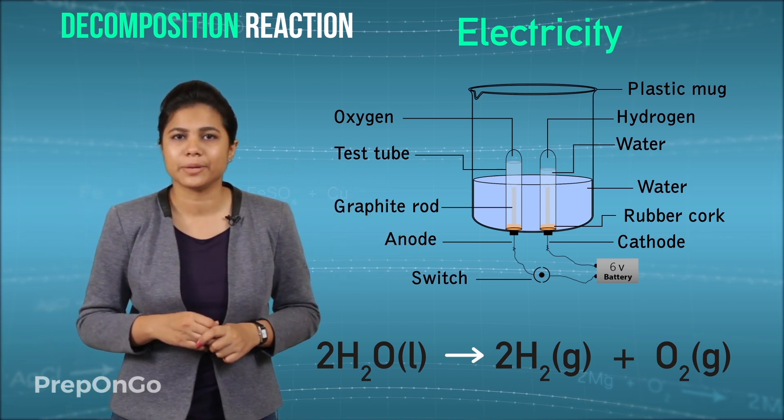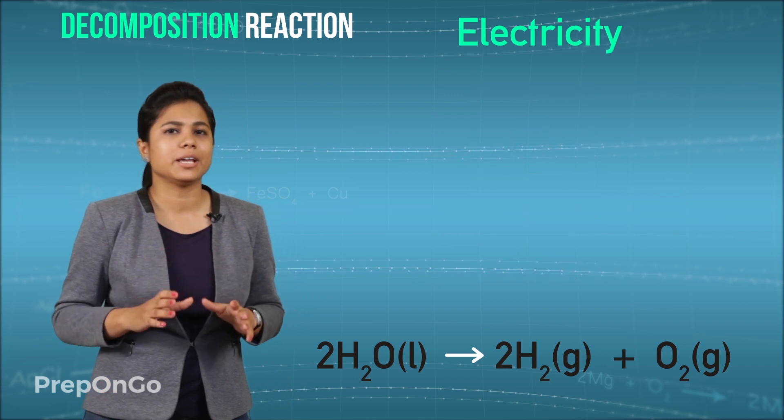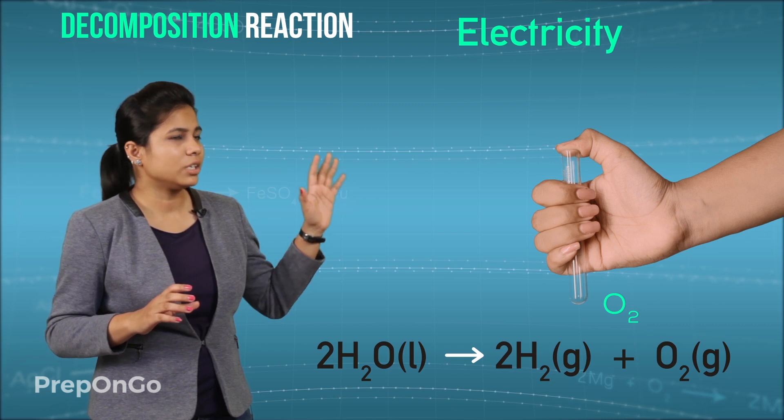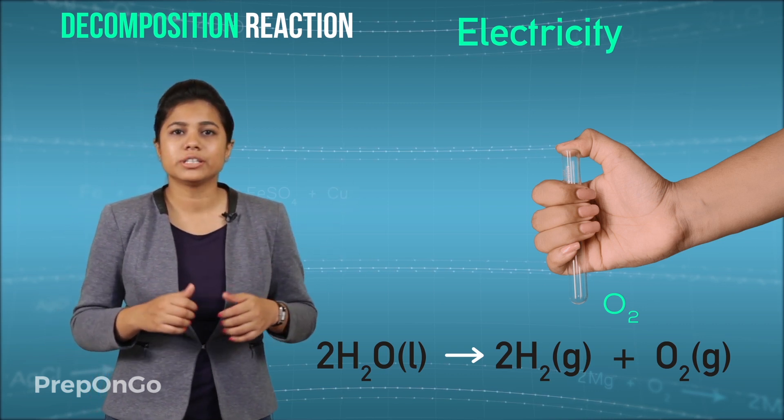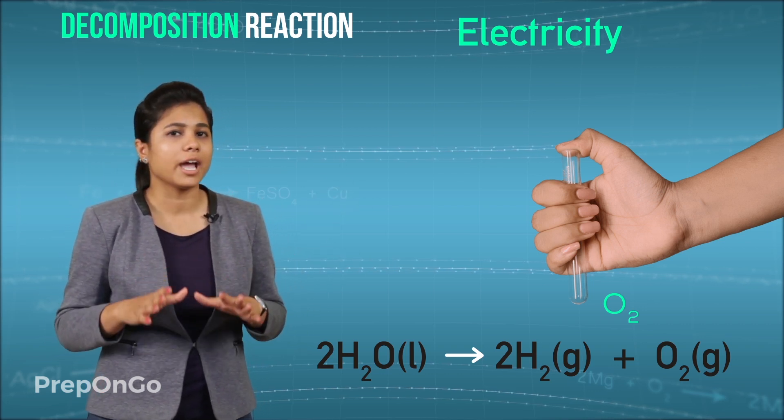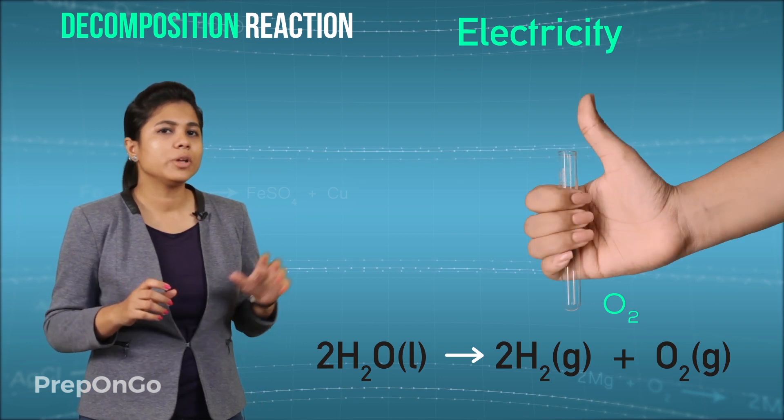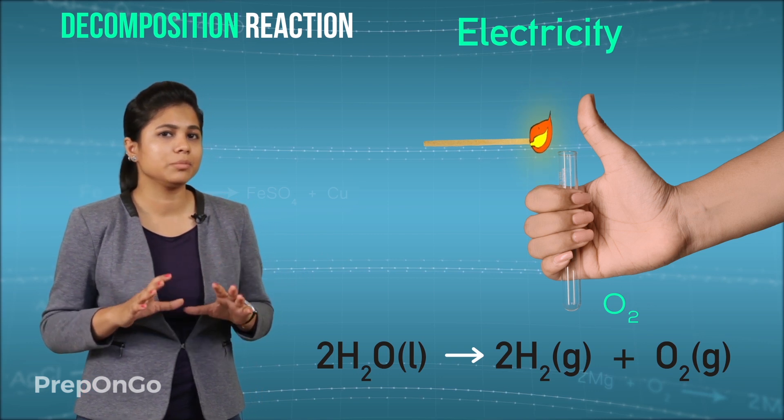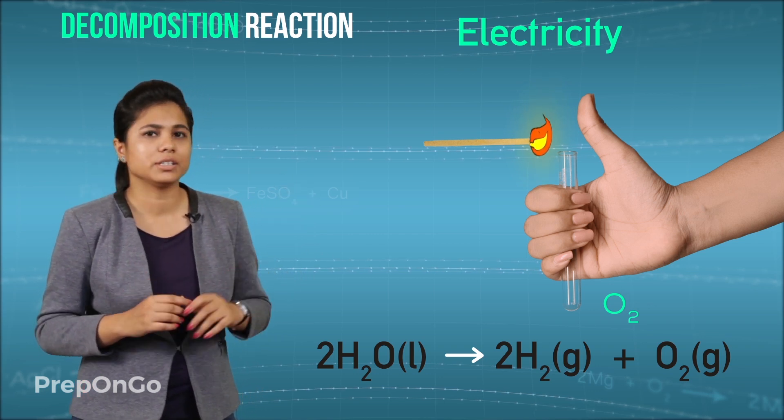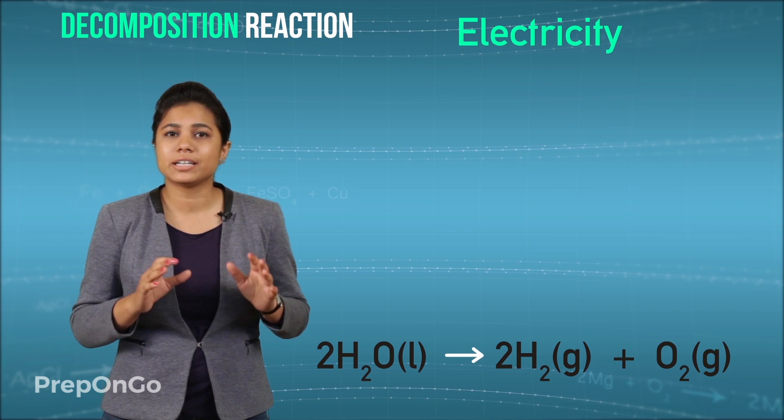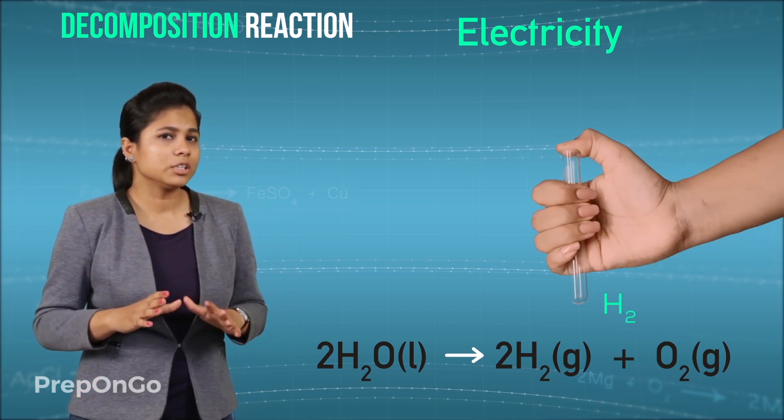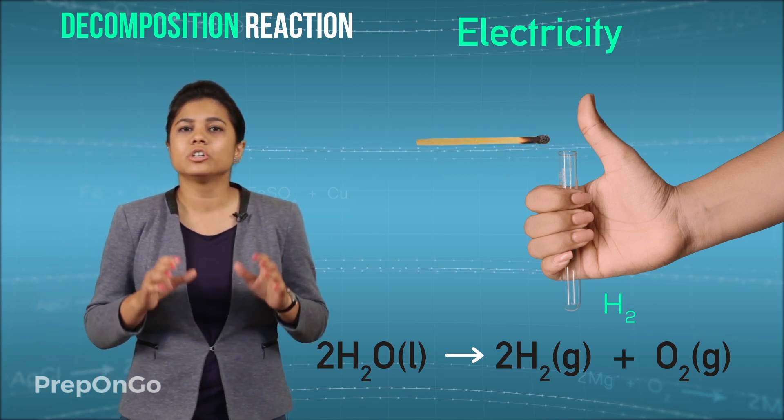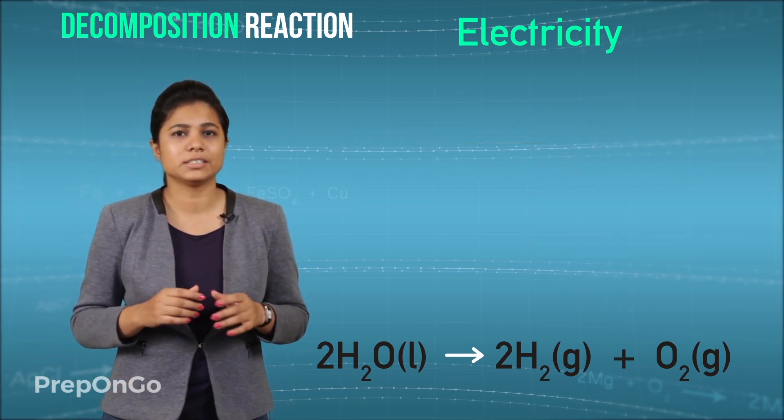But how will you test them? We can test them by bringing burning matchstick near their mouth. So we will take out the test tubes keeping a thumb on the test tubes mouth so that the gas does not escape. When you bring the burning matchstick near the first test tube you will see that the burning matchstick is burning vigorously. So you can say that it has oxygen. On the second test tube you will see that the matchstick extinguishes with the pop sound. So you can confirm that it has the hydrogen gas.